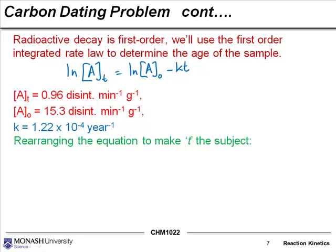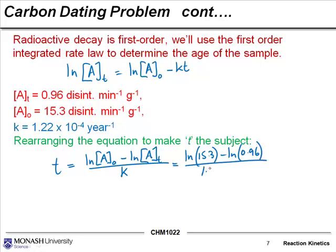Because what we have is the initial concentration, the final concentration, we've got the rate constant. So as long as we can just rearrange this equation, so if I do a little rearrangement, I'm probably going to get something which looks like this. Okay, well we've got all these values right. We've got the log of 15.3 minus the log of 0.96, and we divide that by k which we worked out in the previous part of the question.